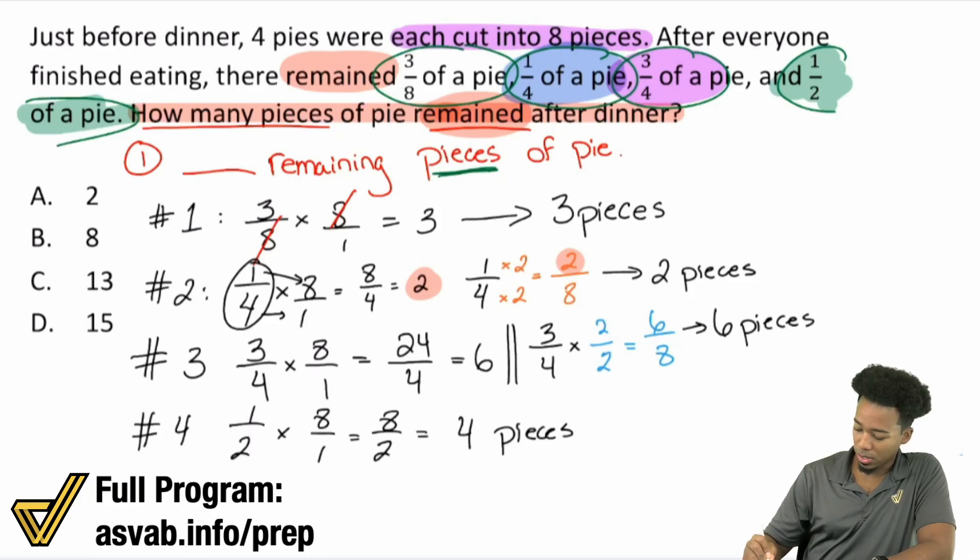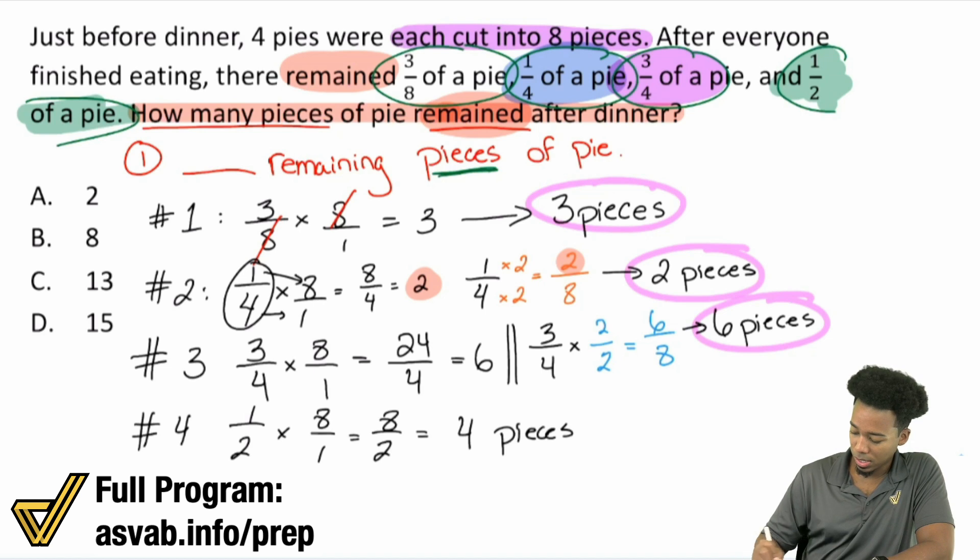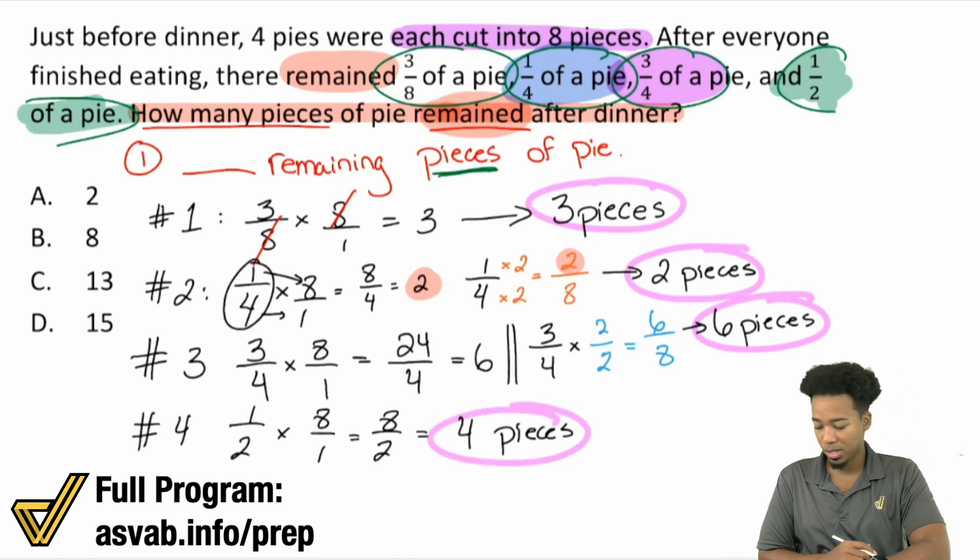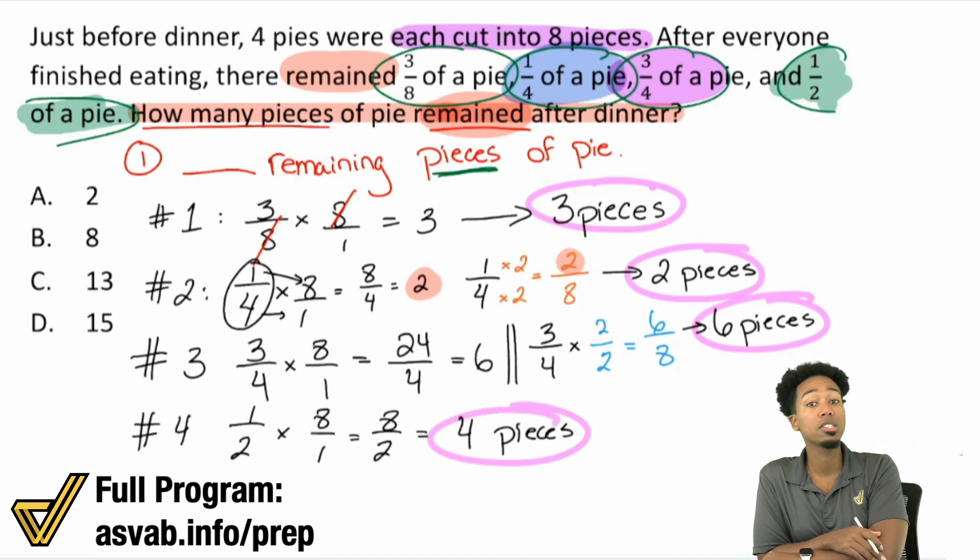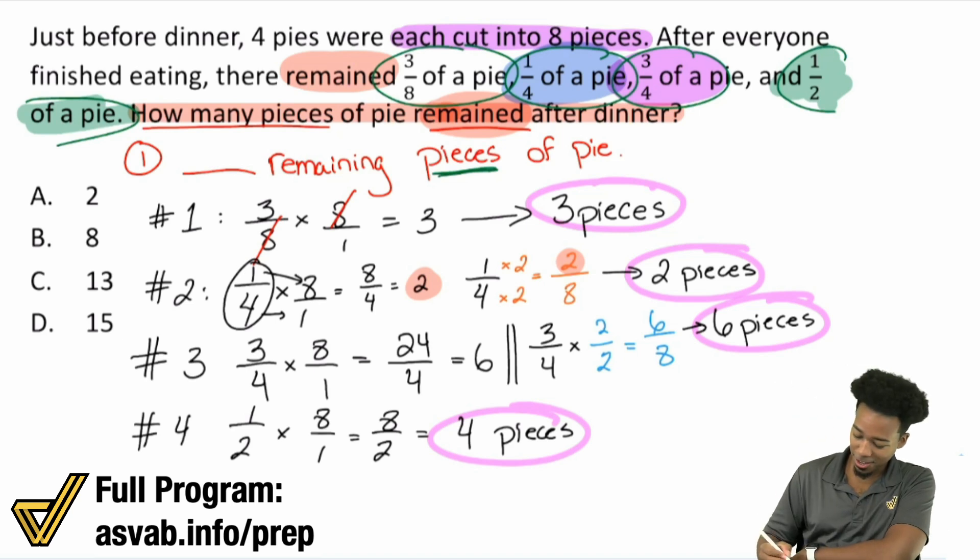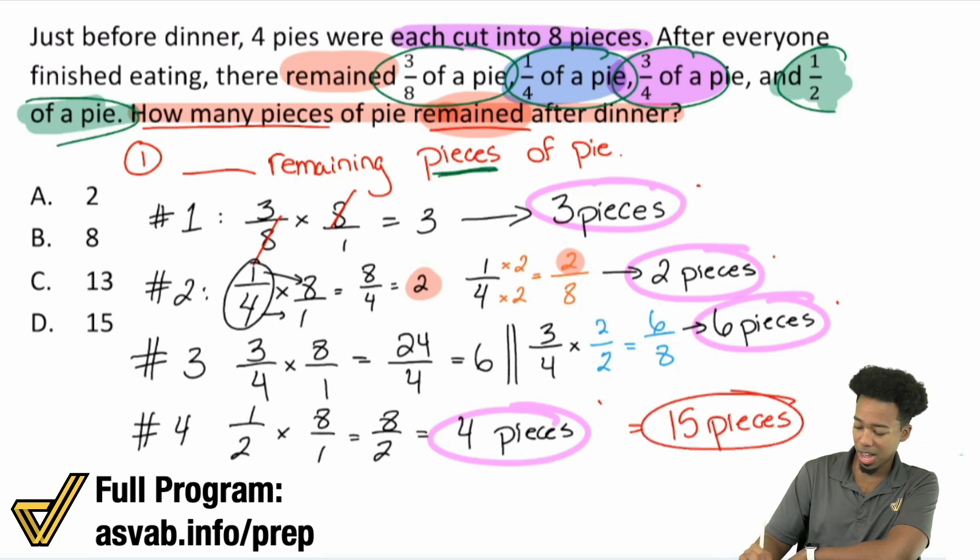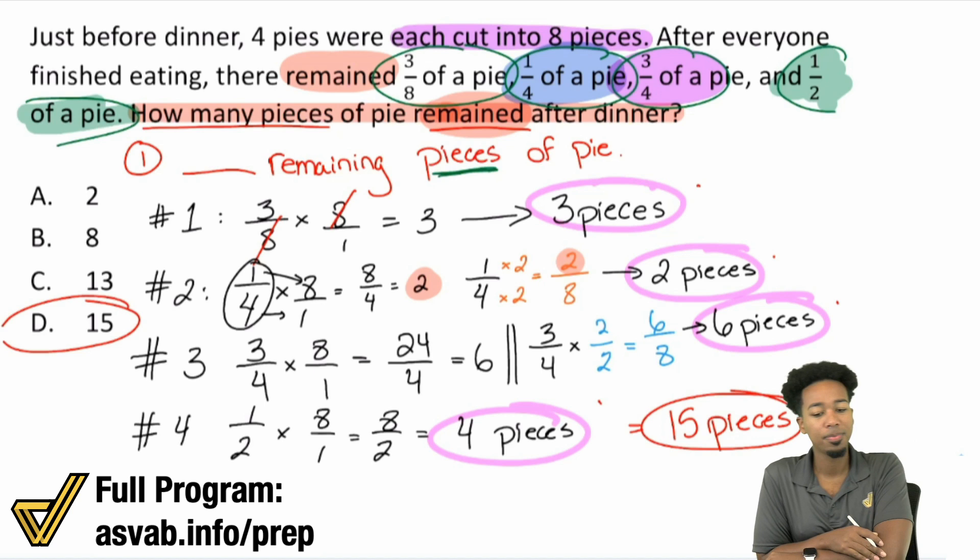So let's understand this. We have 3 pieces, 2 pieces, 6 pieces, and 4 pieces. So how many total pieces of pie is that? All we have to do is add. If we add it all together, we'll get 3 plus 2 is 5. 5 plus 6 is 11. 11 plus 4 is 15. So we have a total of 15 pieces of pie left over. And there we are.